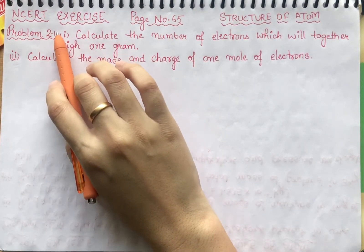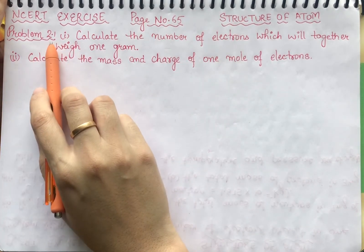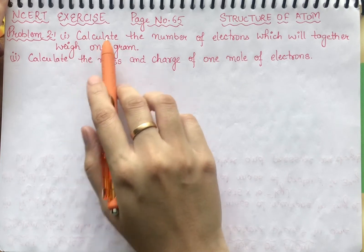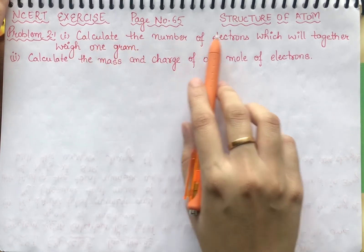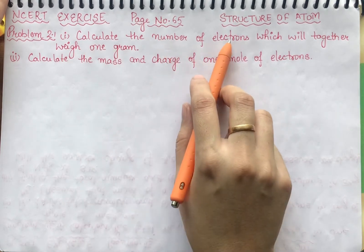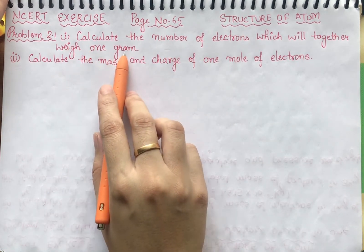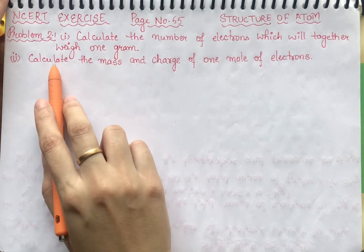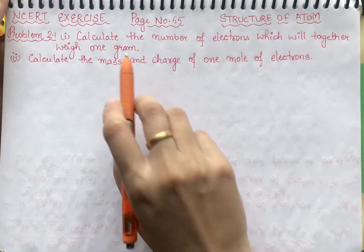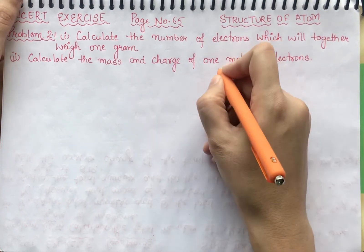Hello students, here is NCRT exercise page number 65, problem number 2.1. We are split into two problems. The first problem is to calculate the number of electrons which will together weigh 1 gram. The second is to calculate the mass and charge of 1 mole of electrons.